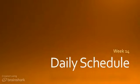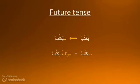Week 14, Daily Schedule. This is the last of the three basic verb tenses. Simply take the present tense and add a prefix: يَكْتُبُو becomes سَيَكْتُبُو. Or you can also use a separate word with the same meaning: سَيَكْتُبُو or سَوْفَ يَكْتُبُو.